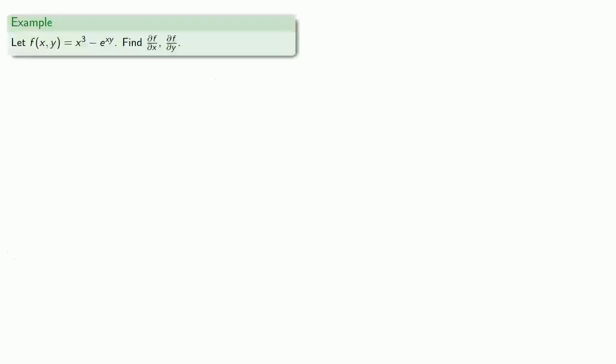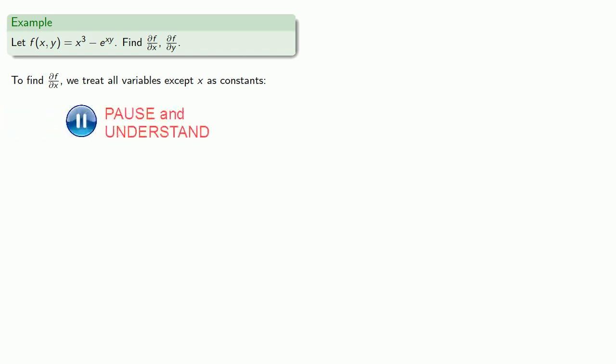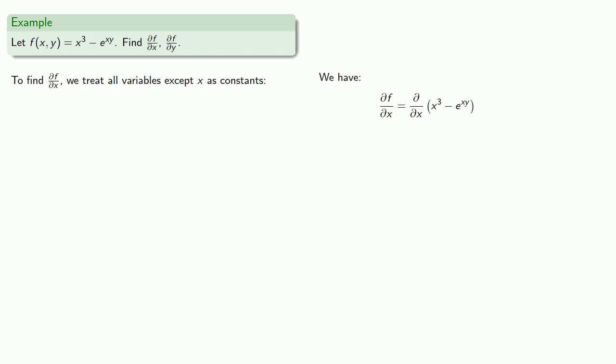So for example, let f(x,y) = x³ minus e to the power xy. Let's find the partial derivative of f with respect to x and the partial derivative of f with respect to y. The crucial idea here is that to find these partial derivatives, we treat all other variables as constants. To find the partial of f with respect to x, we treat all variables except x as constants. It helps to think about this in terms of differential notation: this is the derivative with respect to x of x³ minus e to the power xy. All of our regular derivative rules still apply because we are now thinking about y as a constant.